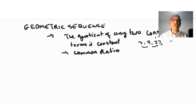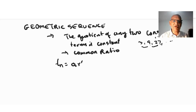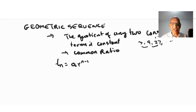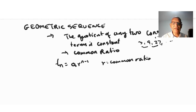For a geometric sequence, the general term formula is Tn = a · r^(n-1), where a is the first term, r is the common ratio, and n is the number of terms. Remember the power n minus 1 applies only to r, not to a.